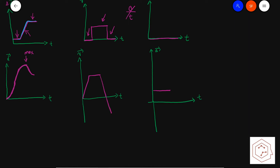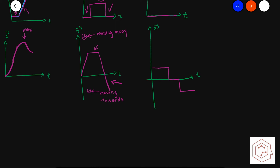It's getting steeper and steeper, which means your velocity is increasing but in the negative region. Positive and negative simply refer to direction — I allowed positive to be moving away from the reference point, whereas negative is moving back towards it. When you're having a negative velocity, it means that you're speeding up but moving towards the reference point, so you have a negative acceleration.